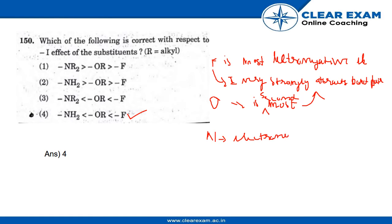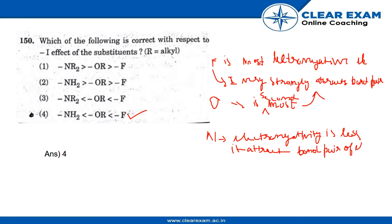The electronegativity of N is the least among the three, so it attracts the bond pair of electrons but not as strongly as F and O do. Therefore, the correct option is NH₂ < OR < F.